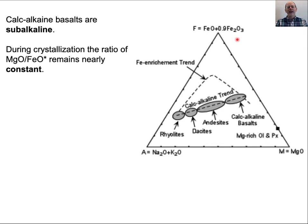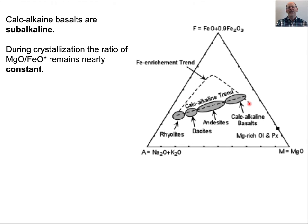An interesting phenomenon is that when we look at chemical trends on these diagrams, most basalts start out in this region. It doesn't matter if they are mid-ocean ridge basalts or arc basalts — they tend to be in this region. Mid-ocean ridge basalts tend to follow an iron enrichment trend, which draws them up and then down again.